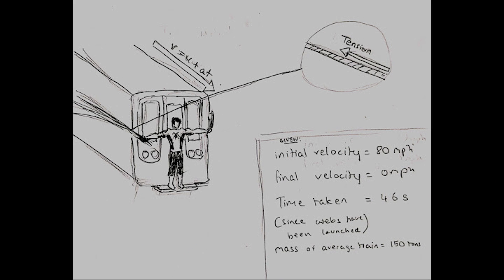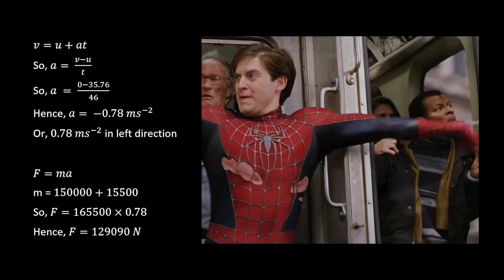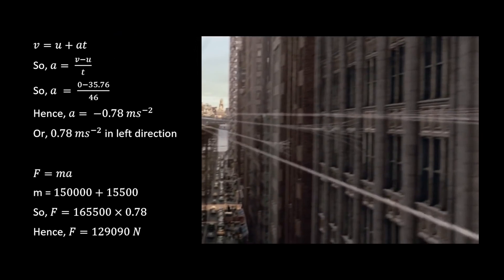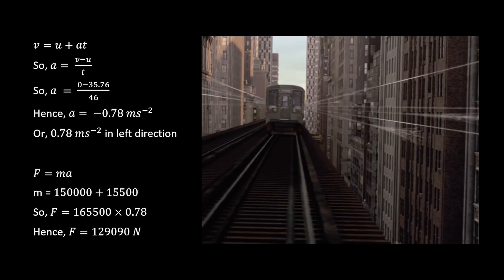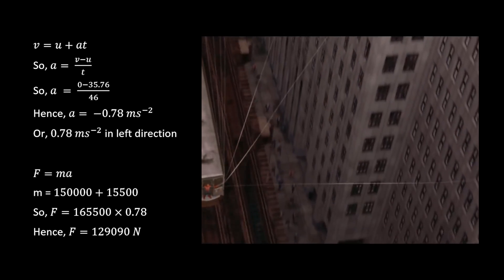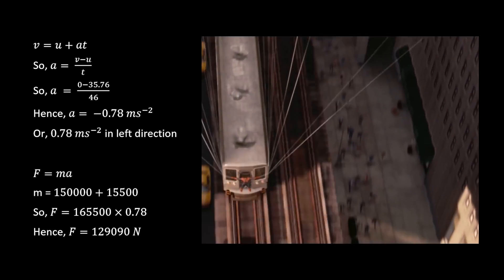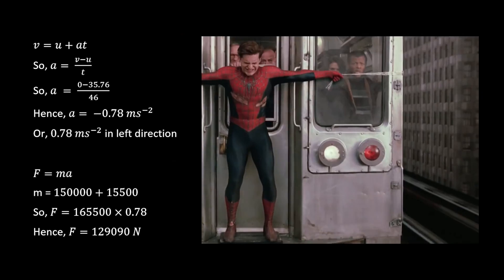From the clip, we know the initial and final velocity, the time taken since the webs were launched, as well as the mass of the train with six compartments. Using the first equation of motion, by rearranging the terms, we can find the acceleration of the train in the backward direction as it slows down.